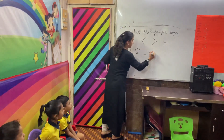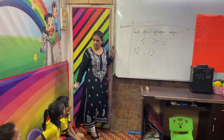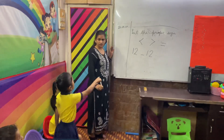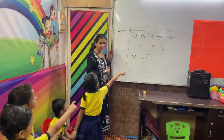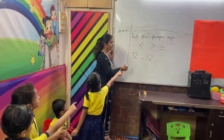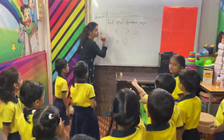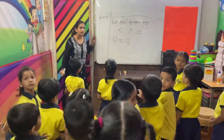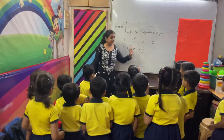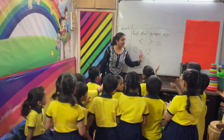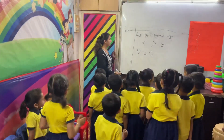Suppose I am going to write 12 dash 12. Tell me which is bigger, which is smaller, or is it equal to? We call it the equal to sign. Why? Because the numbers are the same. Very nice.